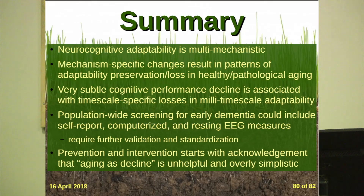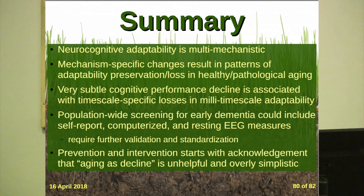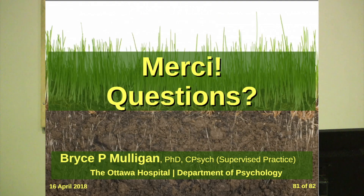In summary, adaptability is multi-mechanistic. Mechanism-specific changes result in patterns of adaptability, preservation, and loss in healthy and pathological aging. Very subtle performance declines are associated with timescale-specific losses in the briefest timescales of brain adaptability. Population-wide screening for early dementia could use self-report, computerized, and resting EEG measures very easily without much burden — though they require further validation. Prevention and intervention starts with the acknowledgement that aging as decline is unhelpful and overly simplistic. Thank you for paying attention and coming in today — I'll take some questions now.